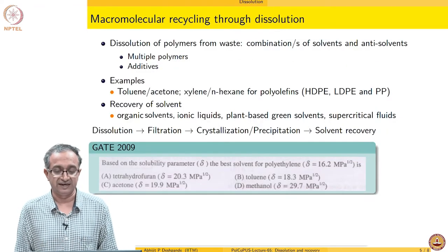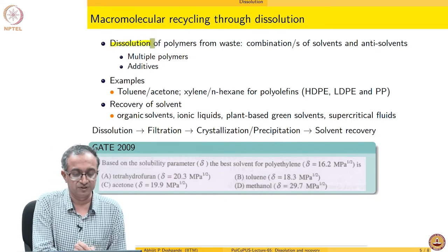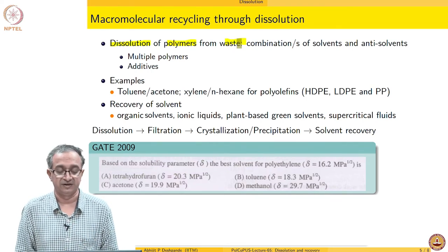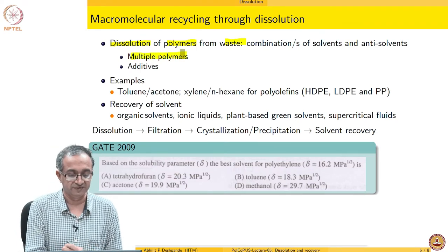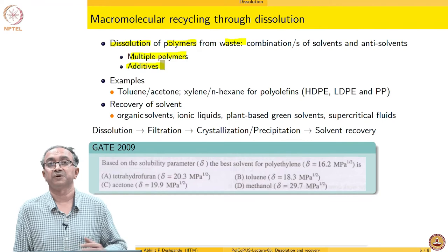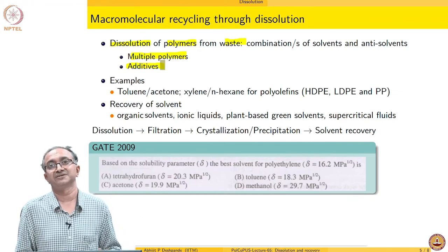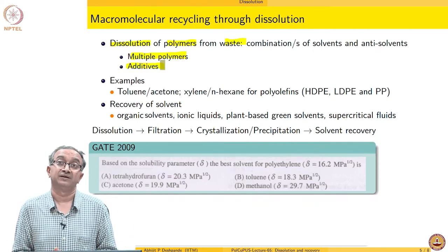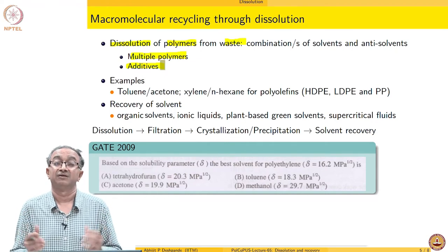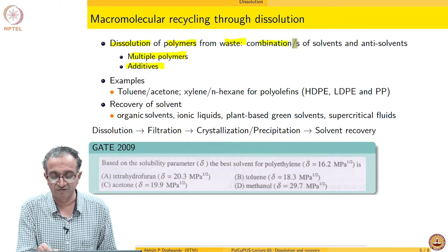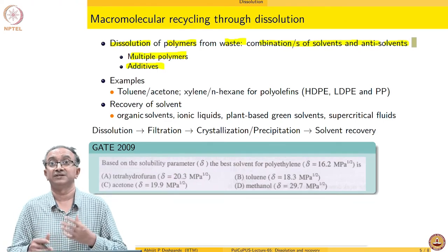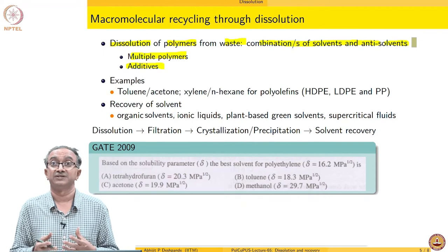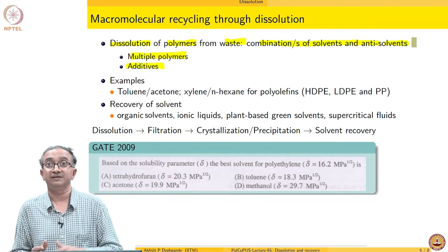So let us look at what is this macromolecular recycling through dissolution. The idea is to dissolve the polymer from waste. And of course, this is not trivial because we have a mixture of polymers generally. It is a mixed waste plastics. There are multiple polymers there. Not only that, there are lots of additives from compatibilizers to pigments to UV stabilizers. We have seen the whole gamut of small molecules and oligomers and macromolecules which could be part of a commercial polymeric system. Generally, what we would have to do is look at a combination of solvents and for precipitation anti-solvents or co-solvents and non-solvents, so that we can devise a proper strategy of dissolving, precipitating, dissolving, precipitating.